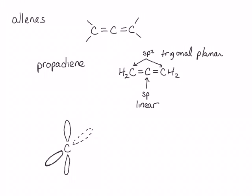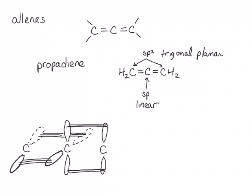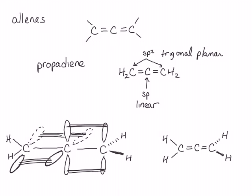This means that the planes of the two trigonal planar carbons on either end must also be perpendicular to each other to allow for proper orbital overlap. One p-orbital is going up and down, and the other is going into and out of the screen. The carbon on one side will have p-orbitals that go up and down to overlap with the central carbon's p-orbital, and the carbon on the other side will have an unhybridized p-orbital that goes into and out of the screen. So on the right carbon, the two carbon-hydrogen bonds will be going into and out of the screen, and on the leftmost carbon, they'll be in the plane of the screen. The actual three-dimensional representation of an allene looks like this. Propadiene has a plane of symmetry and therefore is achiral.